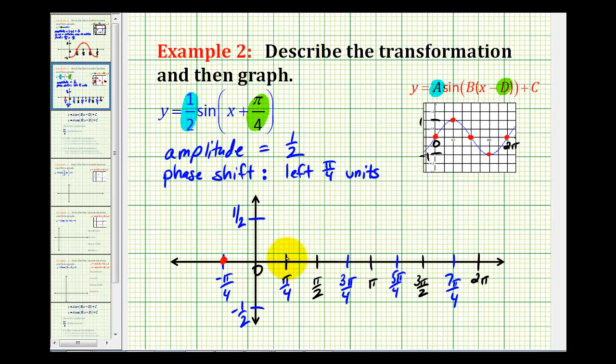The next fourth is this blue tick mark here, that'll be a maximum. The next fourth is at the blue tick mark, so we're here at the midline. The next blue tick mark, we're at a minimum. And the last blue tick mark, we're at the midline.